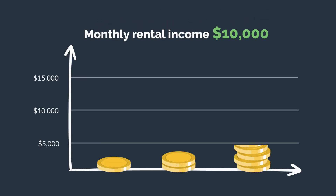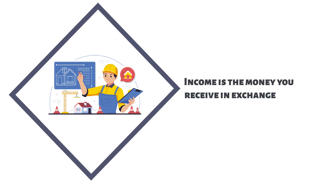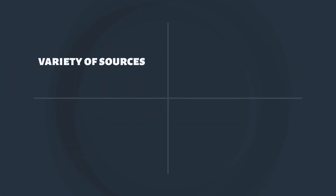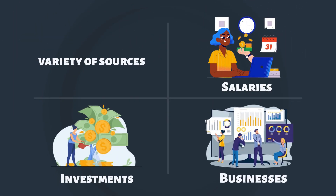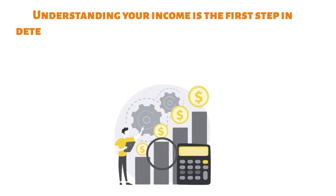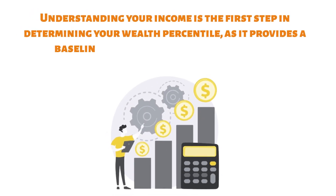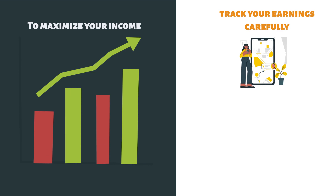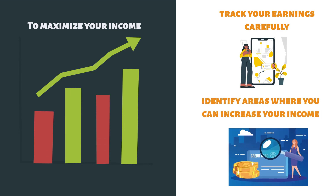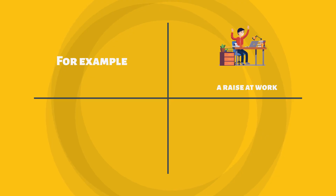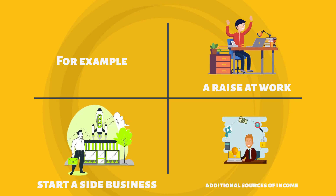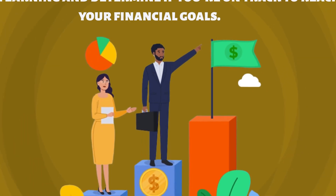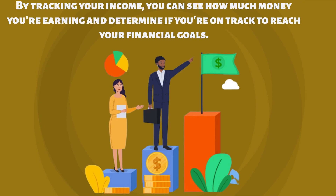Your income plays a crucial role in determining your wealth percentile. Income is the money you receive in exchange for your labour or services, and it can come from a variety of sources, including salaries, investments, and businesses. Understanding your income is the first step in determining your wealth percentile, as it provides a baseline for calculating your net worth. To maximise your income, it's important to track your earnings carefully and identify areas where you can increase your income. For example, you can ask for a raise at work, start a side business, or look for additional sources of income. By tracking your income, you can see how much money you're earning and determine if you're on track to reach your financial goals.